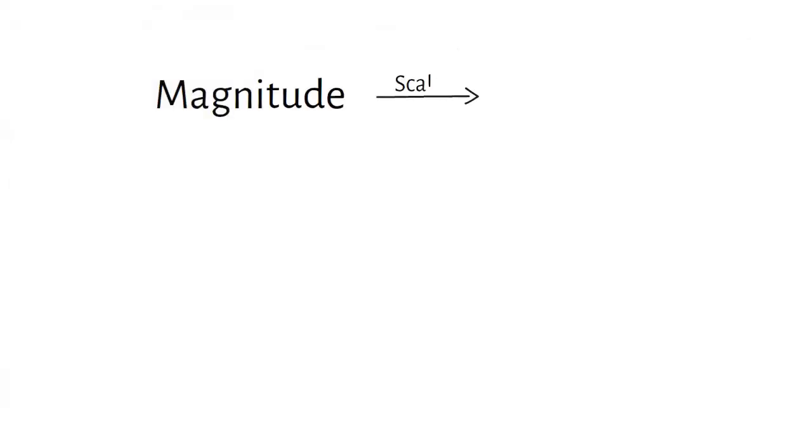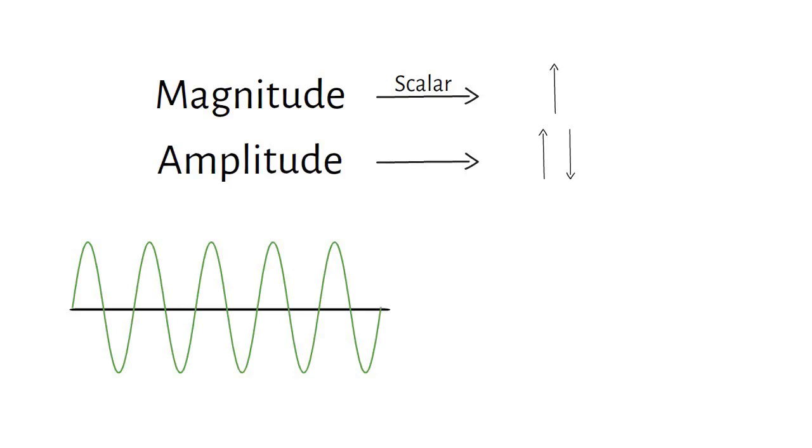Magnitude is a scalar quantity, meaning it only has a numerical value. It is always positive. Amplitude on the other hand, can be positive or negative. The magnitude tells us how large the sinusoid is, whereas the amplitude tells us something about its phase too.